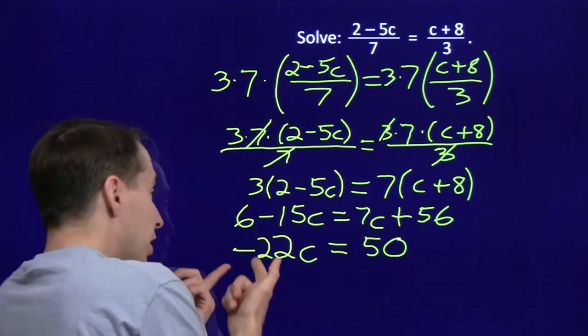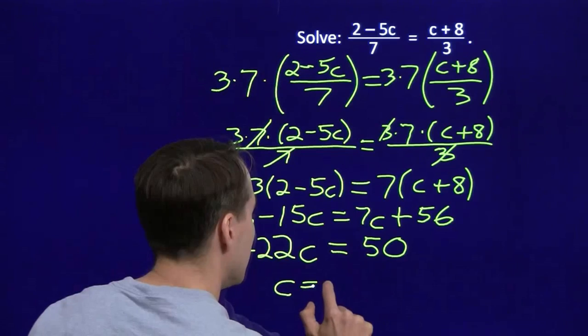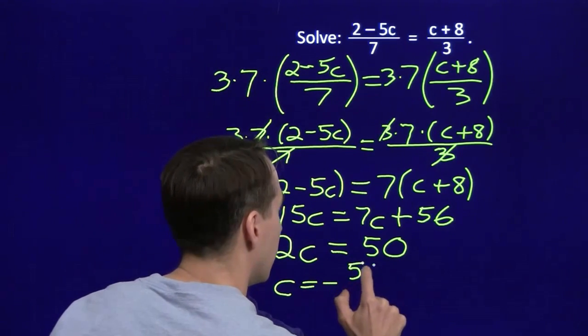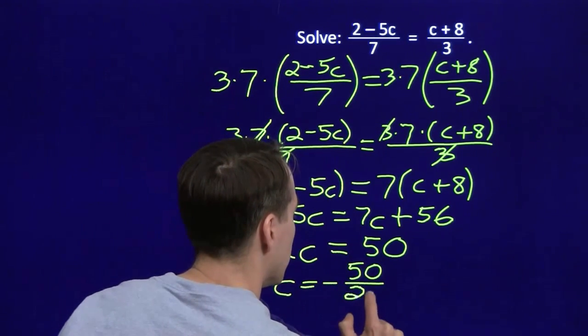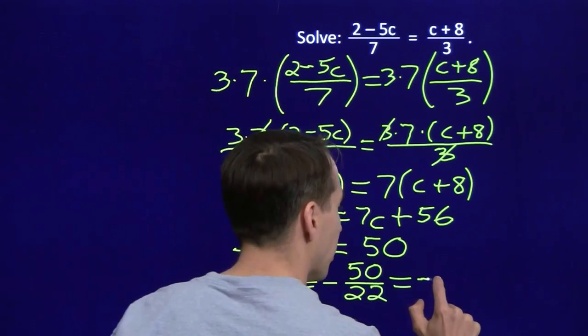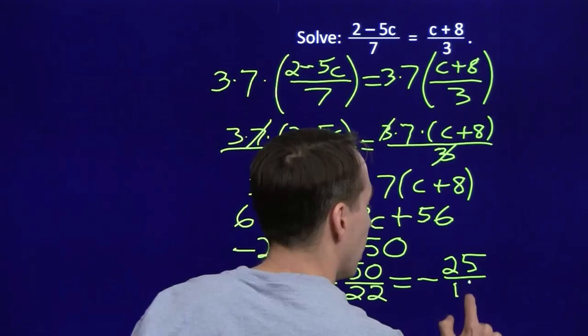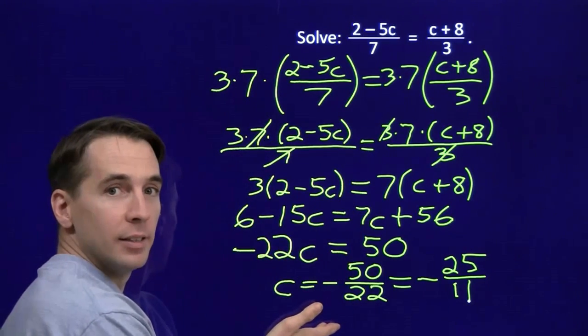And now I isolate the c by dividing both sides by negative 22. And I'll get c is equal to negative 50 over 22. And I can take out a common factor of 2, and I'm left with negative 25 over 11. And we're done.